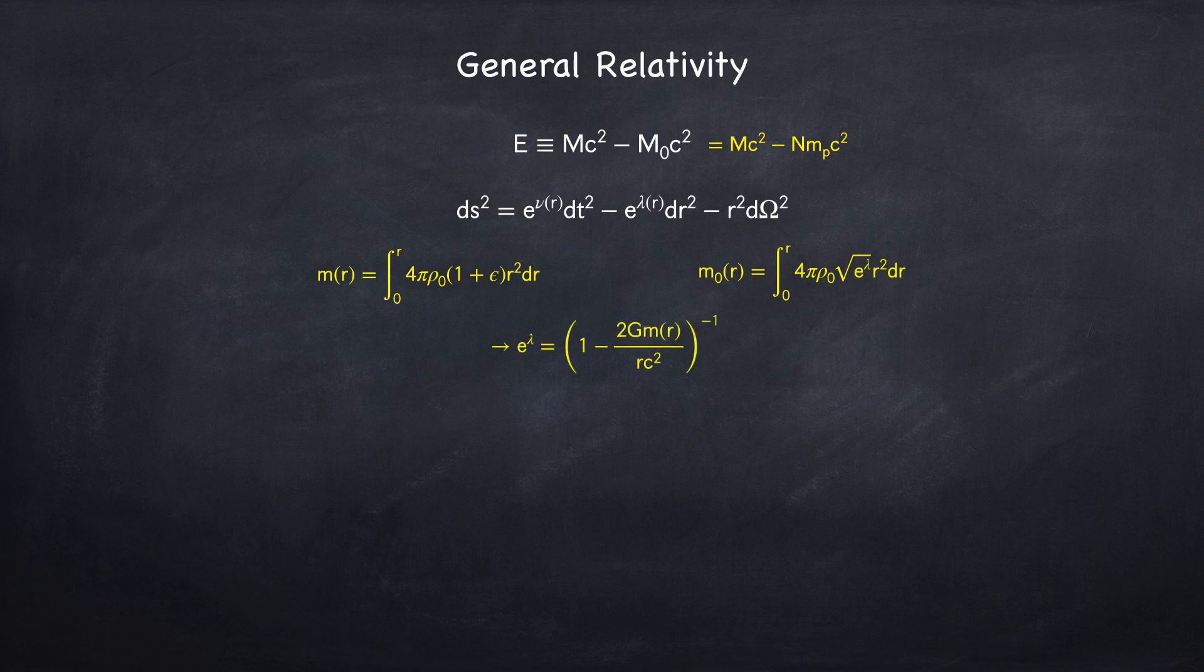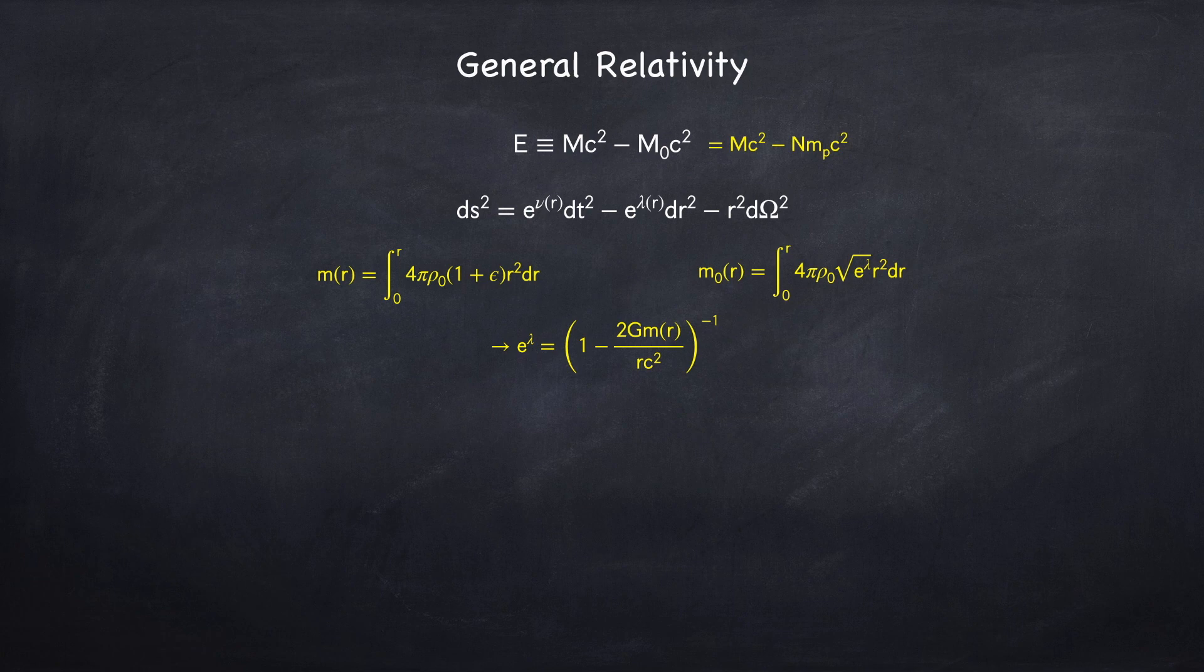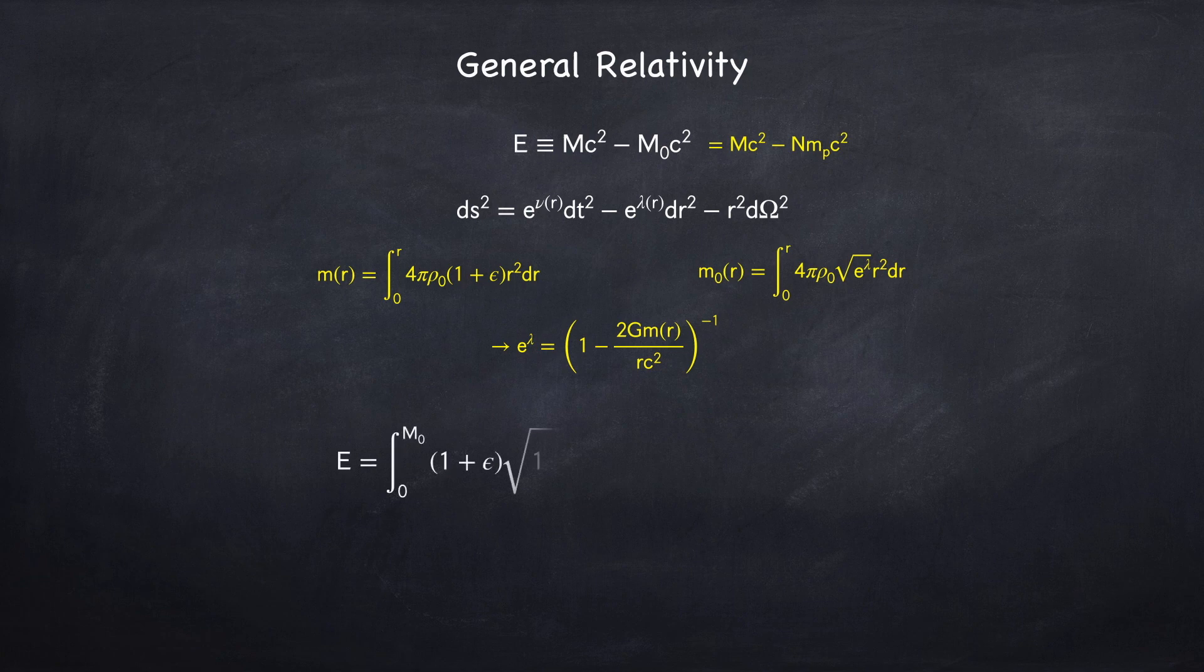We found the following expressions for the rest mass versus the gravitational mass. And we found in stellar physics 3c that this function e to the lambda is equal to the inverse of 1 minus the metric deviation.